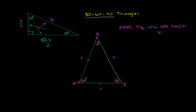Now I'm going to drop an altitude from the top point right over here, straight down. By definition, when constructing an altitude, it intersects the base at a right angle. It's also a straightforward proof to show that this altitude not only is perpendicular to the base, but it bisects the base. You could pause and prove it yourself — it comes out of the fact that these two triangles are congruent.